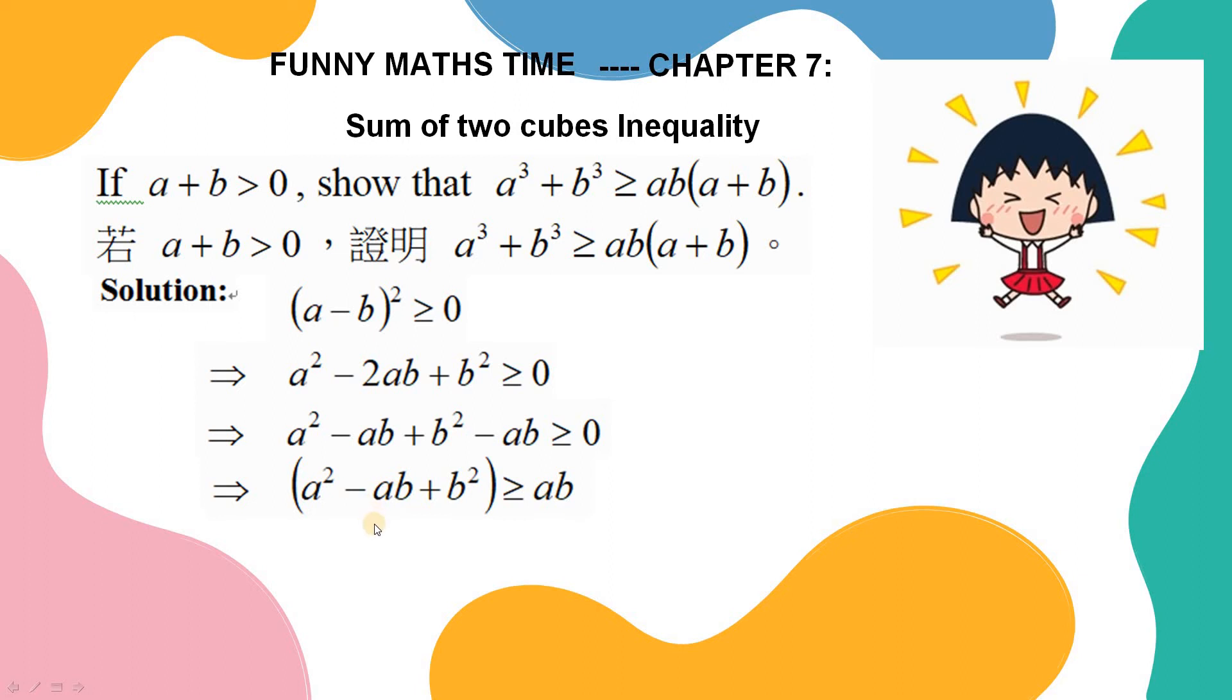I think you can see what I multiply, which is a plus b. I multiply both hand sides of this inequality by a plus b. a plus b times a squared minus ab plus b squared, greater than or equal to ab times a plus b.